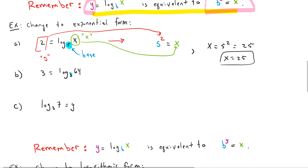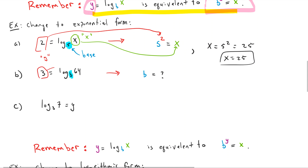Let's do the same thing for the next example. Remember, we start with: what is the base? The base here is just B, which is a little different but we can handle it — we just keep that same base. Now we have two parts: the input and the output. We're going to switch them. The output over here is 3, so that's going to be the new input.